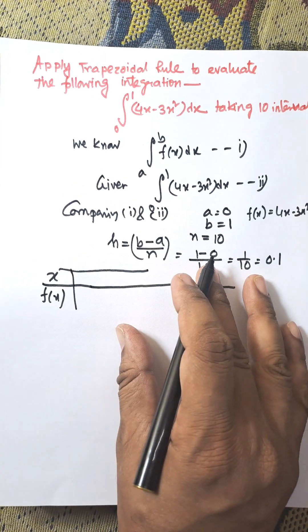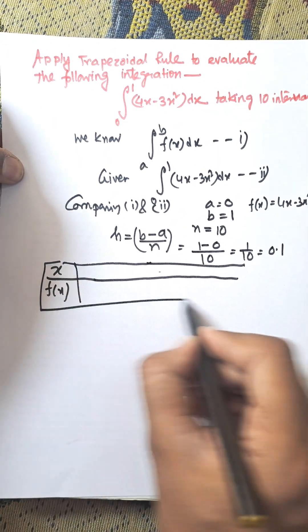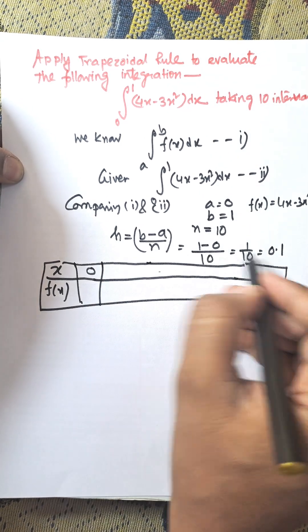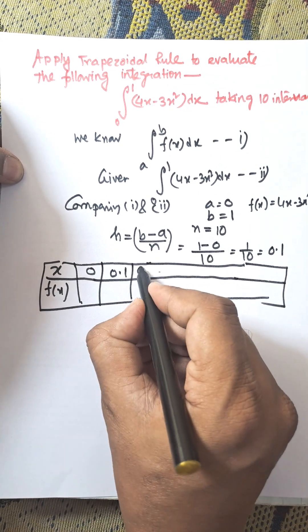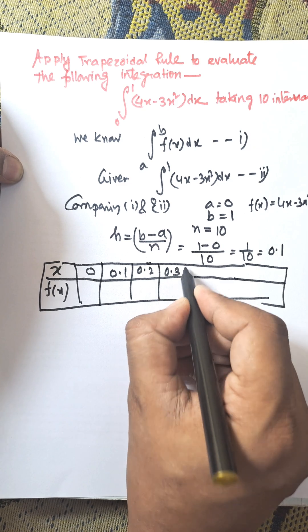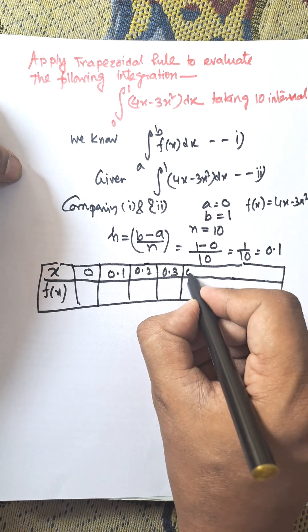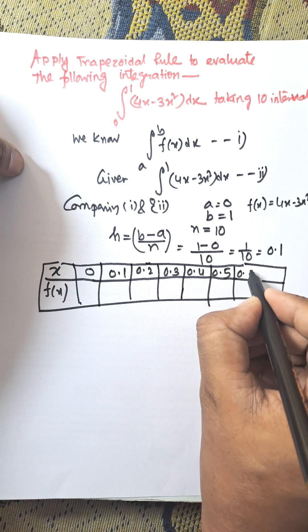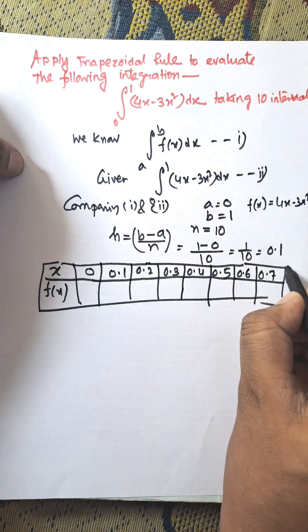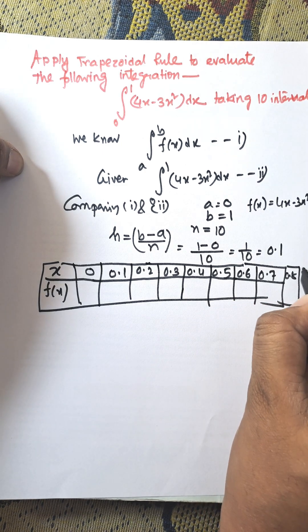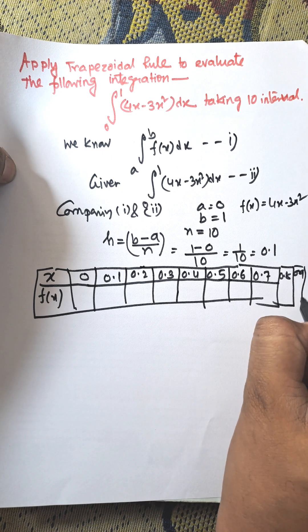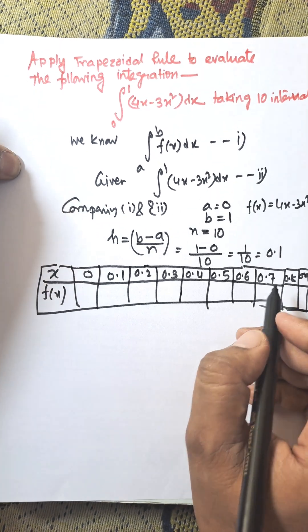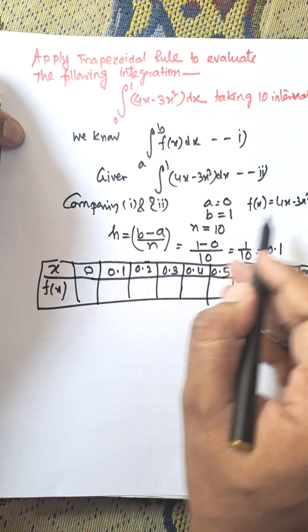x starts from the lower limit, which is 0. Then we increment by 0.1: 0.1, 0.2, 0.3, and continue incrementing until we reach the final point. So 0.4, 0.5, 0.6, 0.7, 0.8, 0.9, and finally 1, which is the last value.